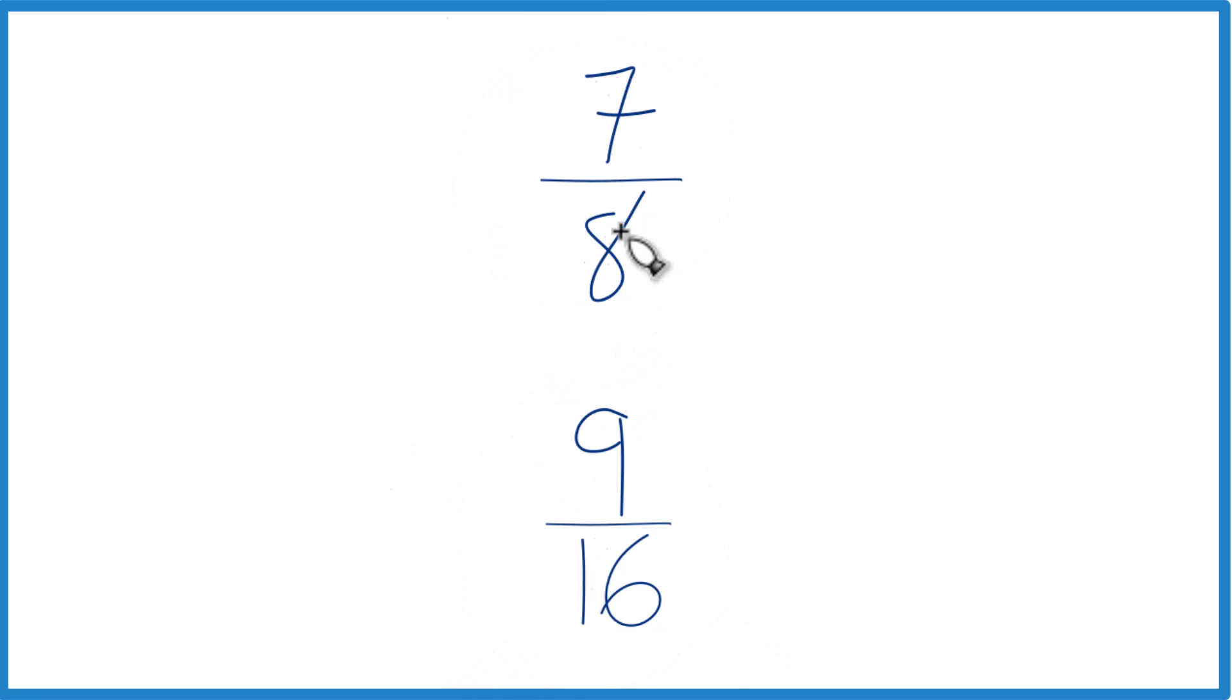Well, first you could just take 7, divide it by 8 on a calculator, get a decimal, then divide 9 by 16 and get a decimal, just compare them. That would tell you whether 7/8 is greater than, equal to, or less than 9/16.